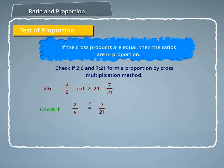Let us check if 2 by 6 is equal to 7 by 21. So multiply 2 by 21 and 7 by 6. It is called cross multiplication.